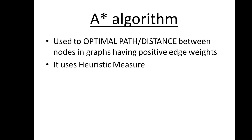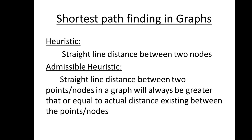This search is said to be a heuristic search or informed search. The heuristic in our problem is the straight line distance between two points, which is our heuristic value. This straight line distance is calculated using Euclidean distance. It should be an admissible heuristic — meaning the heuristic value should be less than or equal to the actual distance or actual cost.